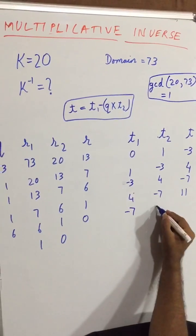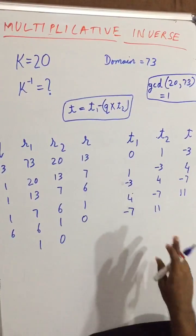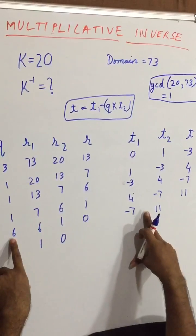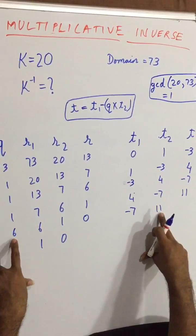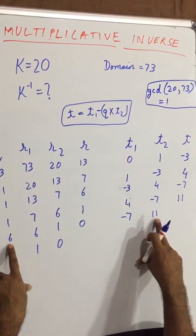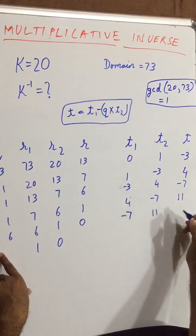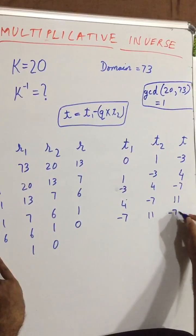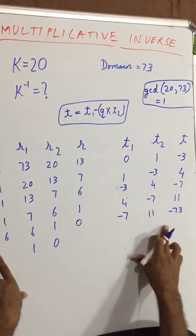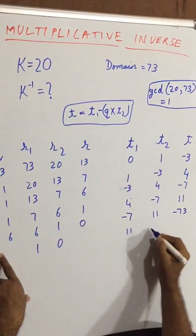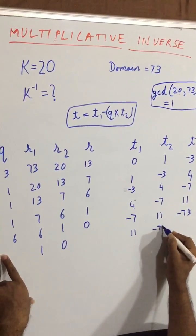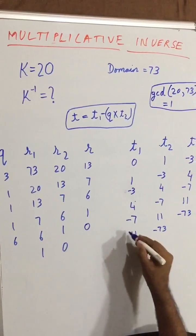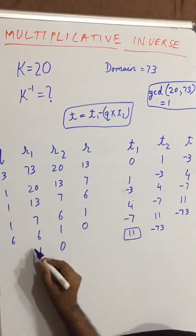So again shift minus 7 and 11. Now minus 7 minus 11 into 6, that is 66. So minus 66 minus 7 gives us minus 73.